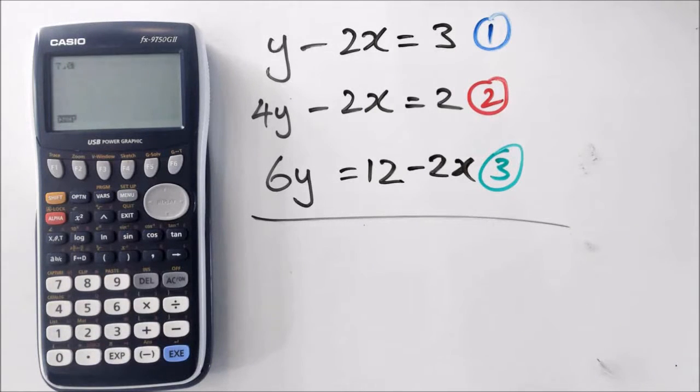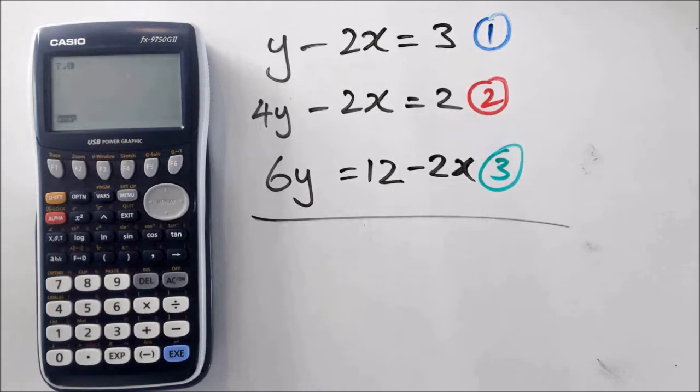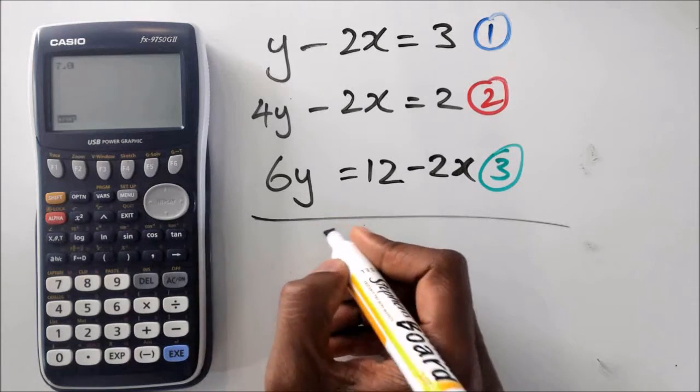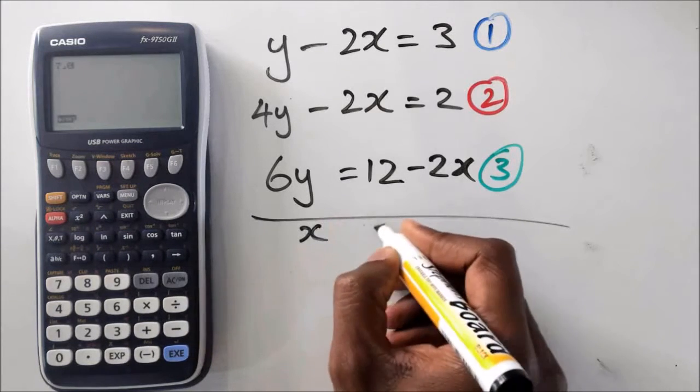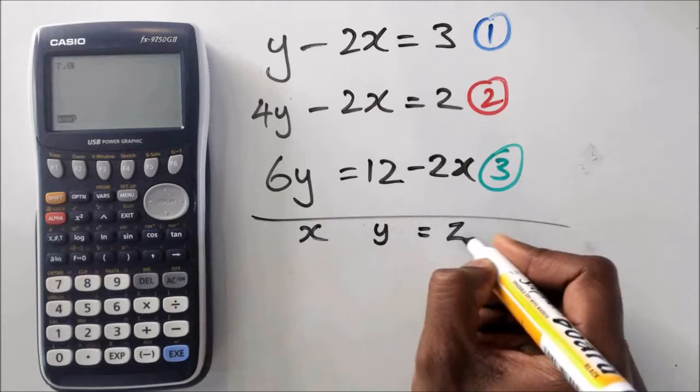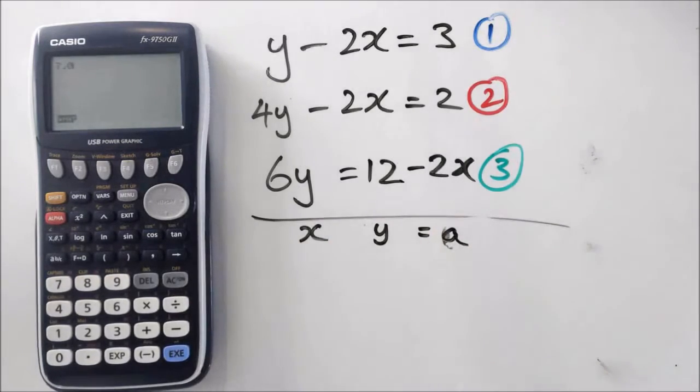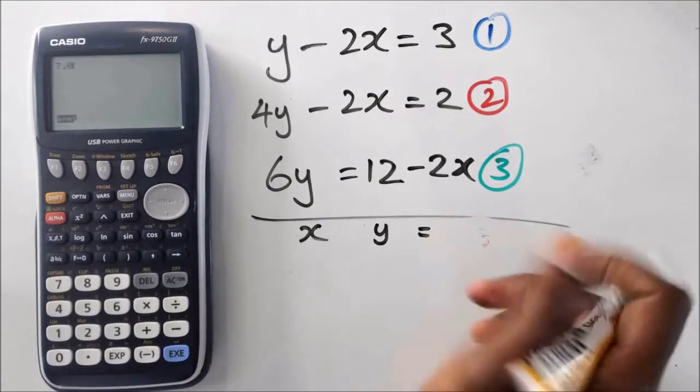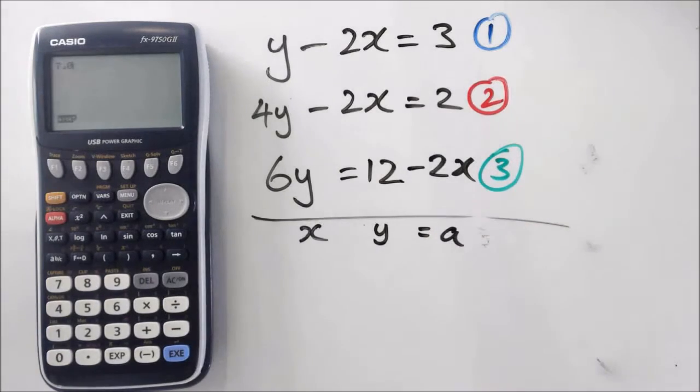That's the first thing you got to do. You got to rearrange it so that you have something like this where you'll have x, y, and a constant. So you got to have your x first, your y second, and then your constant at the end.